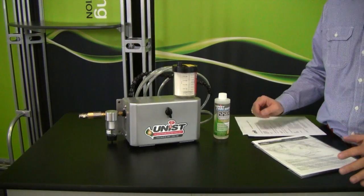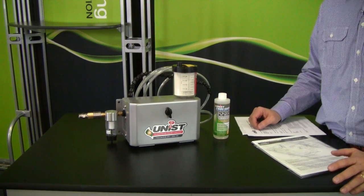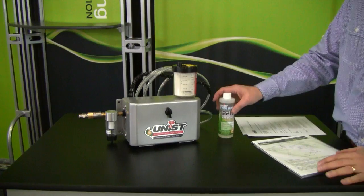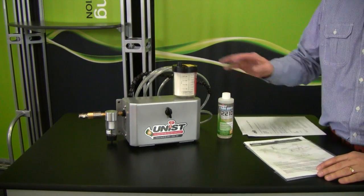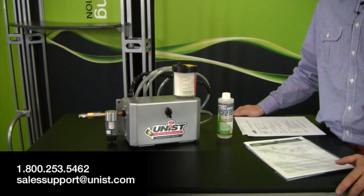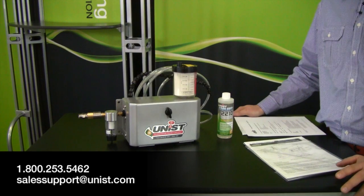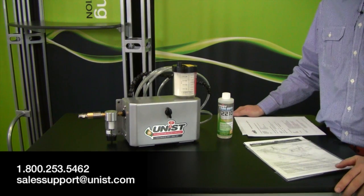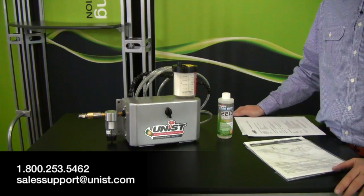Now once you've got everything out of the box, make sure you have everything. And if you think you're missing something, whether it's a cool lube or an instruction manual or some part of the system, make sure you contact us either at 800-253-5462 or email salessupport at unist.com.